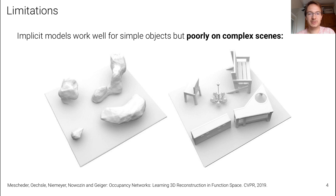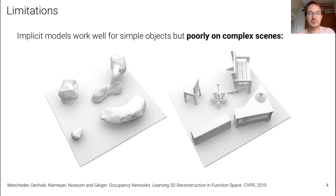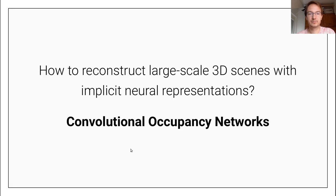If we apply the occupancy network that worked very well on an individual bench to a scene where the input is a sparse noisy point cloud, the network is really not able to capture the details of the scene precisely. This raised the question: how can we reconstruct larger scenes using these implicit neural representations that seem so promising but are fundamentally limited to object-based representations?